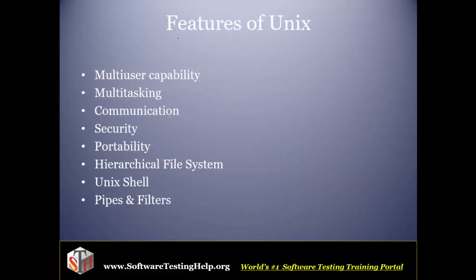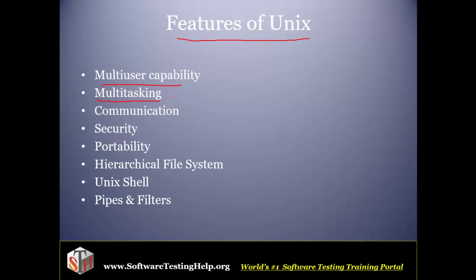Now coming to the features of Unix — what makes Unix so popular. Starting with multi-user capability, which we just discussed. This was a very powerful feature: many users can log in at the same time and work at the same time. Then there is the concept of multi-tasking, where a single user can perform multiple tasks at the same time. For example, a person can download something and at the same time store certain information in Microsoft Word — both tasks executed simultaneously.